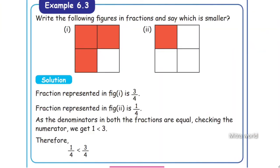Next example: write the following figures in fractions and say which is smaller. The fraction represented in figure 1 is 3 by 4, and the fraction represented in figure 2 is 1 by 4. The two denominators are the same — both are 4. Comparing the numerators, 1 is less than 3. Therefore, 1 by 4 is less than 3 by 4.